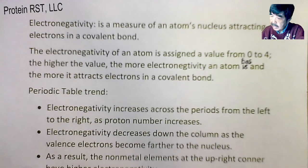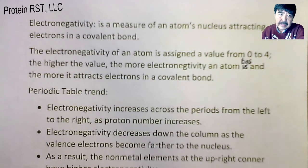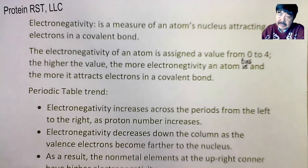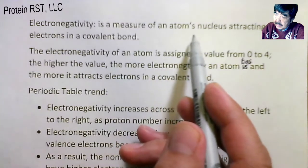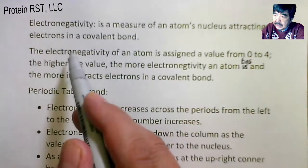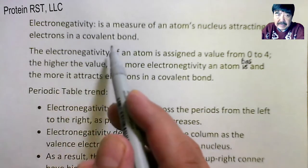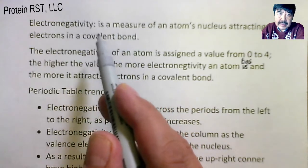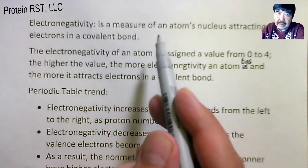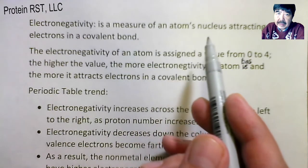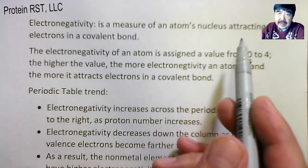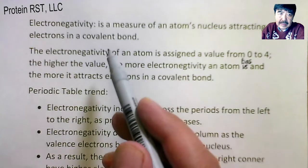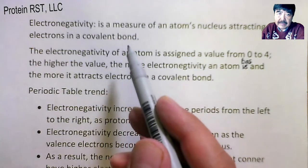Let's take a look at electronegativity today. Electronegativity is a measure of an atom's nucleus attracting electrons in a covalent bond. This is the definition: electronegativity is a measure of an atom's nucleus attracting electrons in a covalent bond.